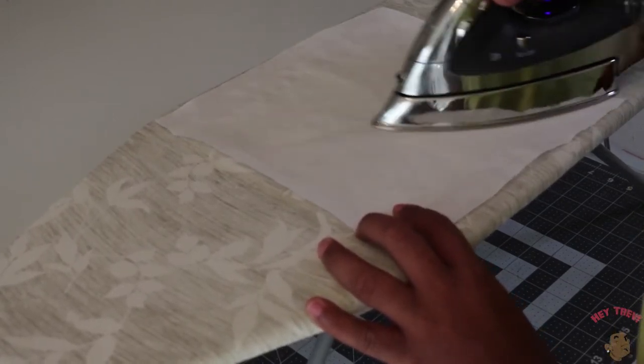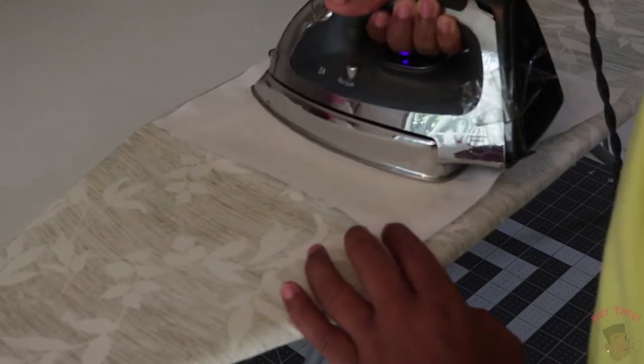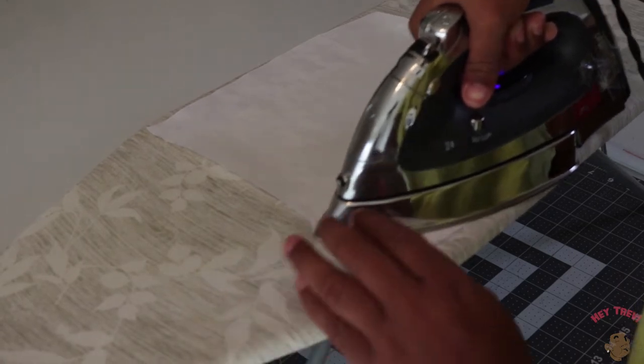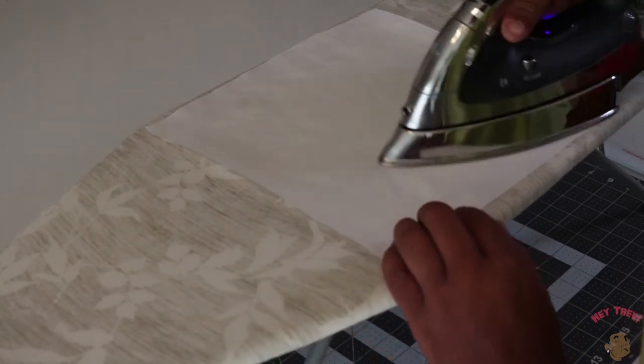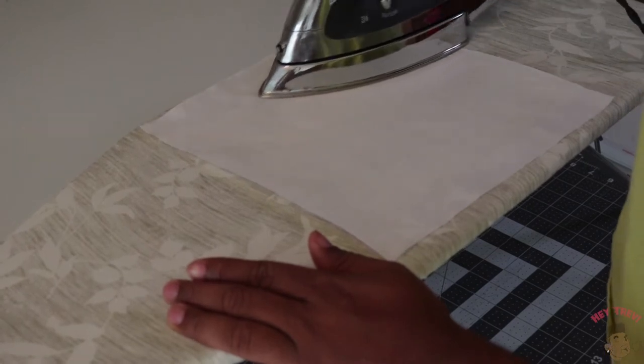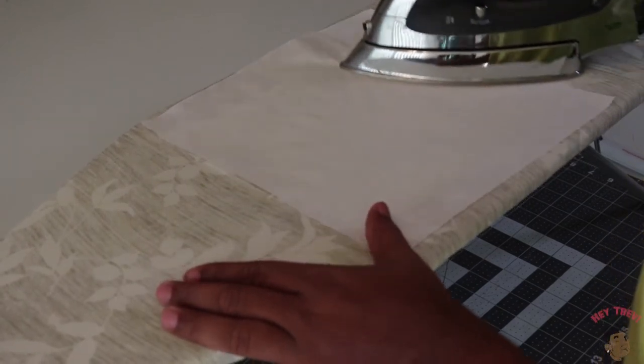After you've ironed on your freezer paper onto your fabric, you're just going to print off that image that you have. I used Adobe Illustrator because it allowed me to scale the image to the size I'd like. I know you can use Word, I'm not sure if you can scale it, you might have to eyeball it, but I used Adobe Illustrator.